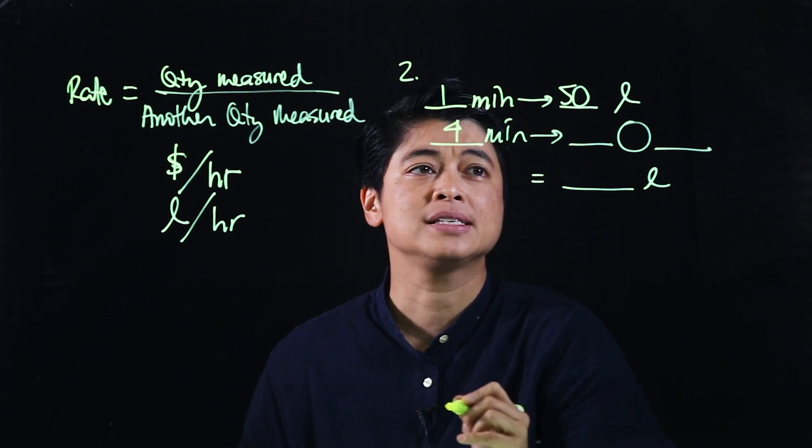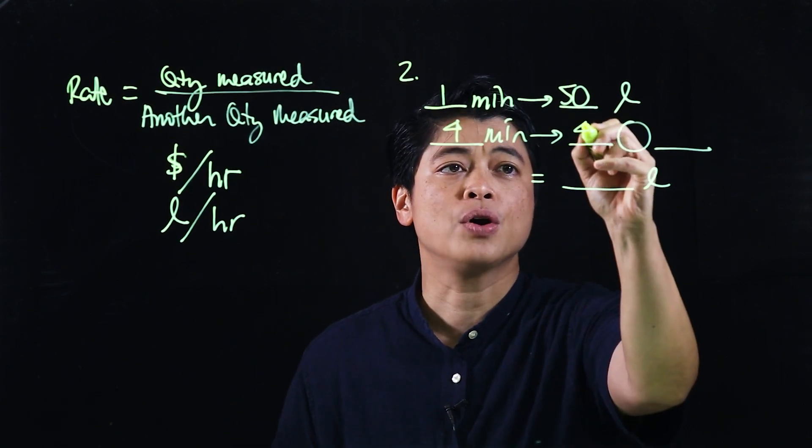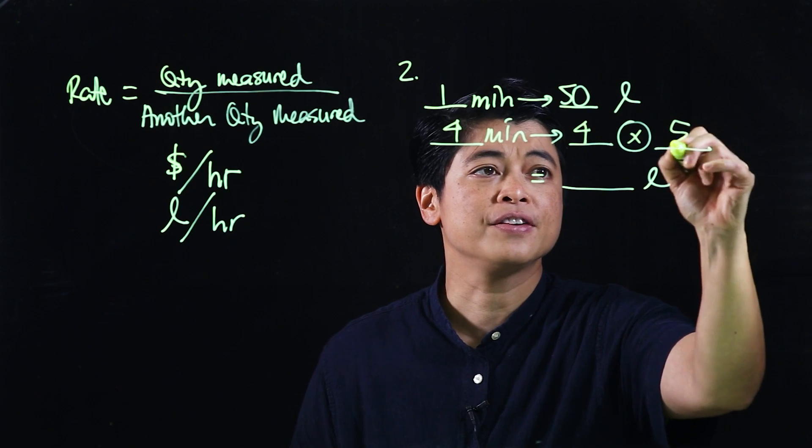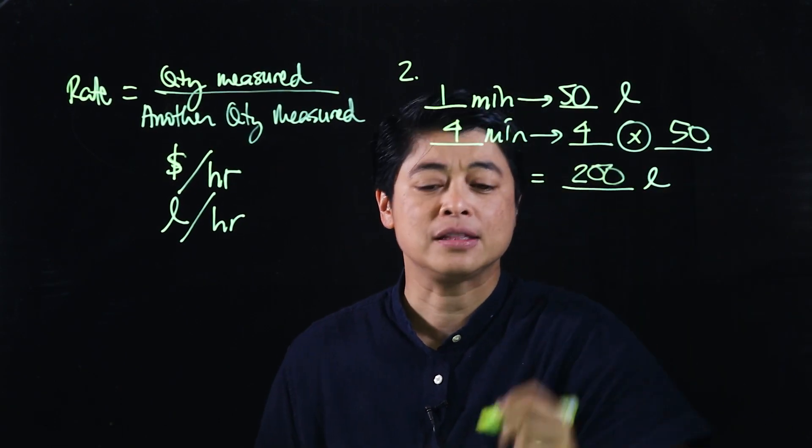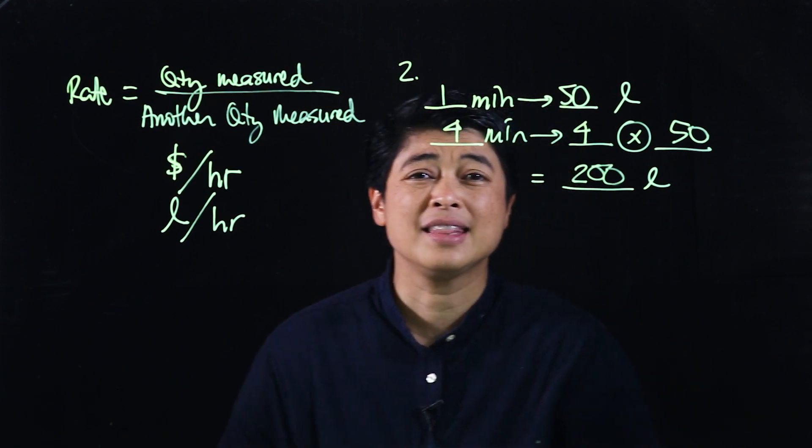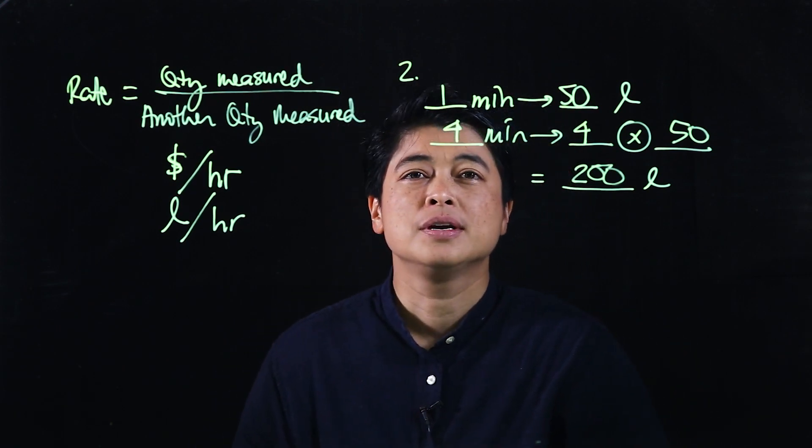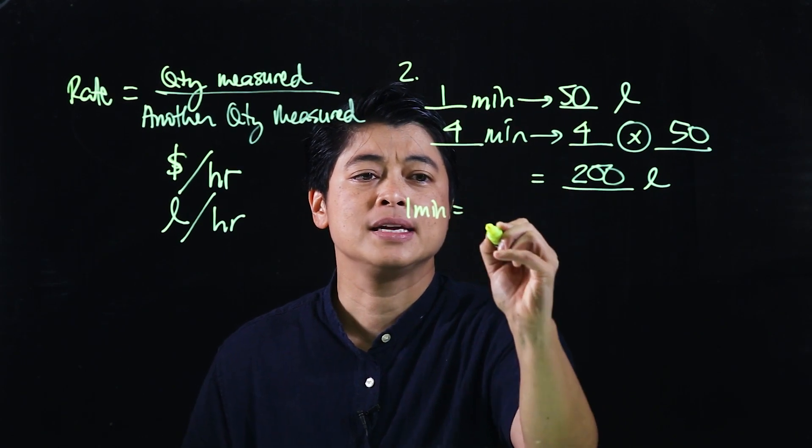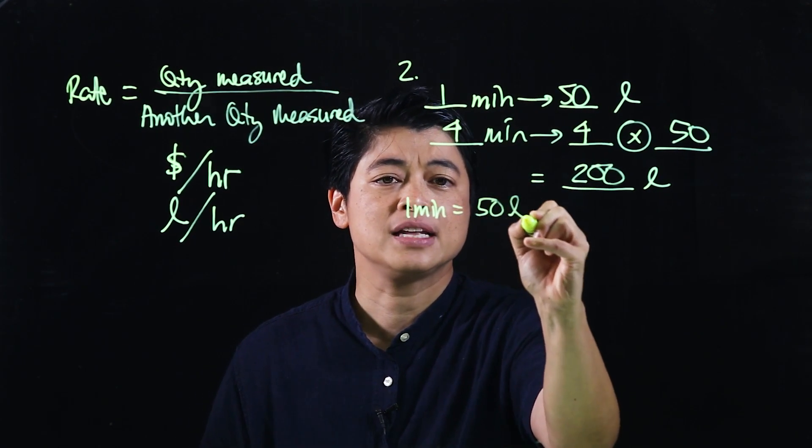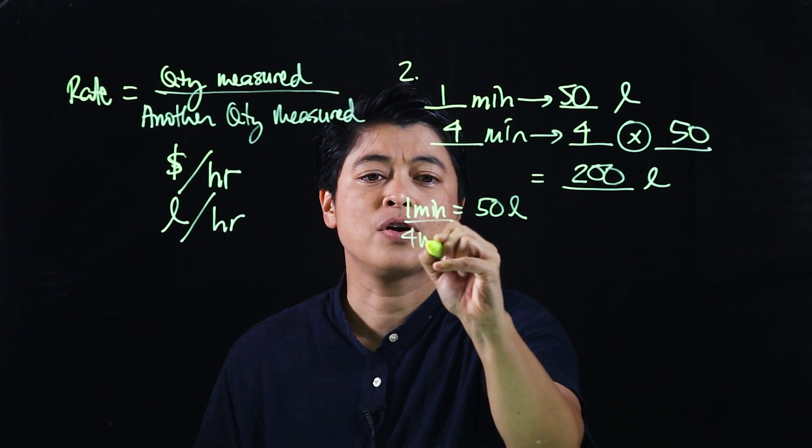Then the question is how many liters of water has flown in four minutes? So this is four minutes is equal to four times 50, which means this is 200 liters. So again, that's the box approach.